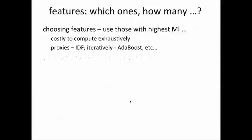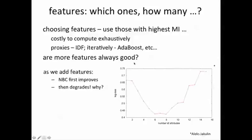Another question we might ask is: are more features always good? The y-axis here is measuring the error in the classification — that means how often naive Bayes gets the wrong answer. This error improves as we add features, but after some time it starts to degrade again. Why might this be happening?